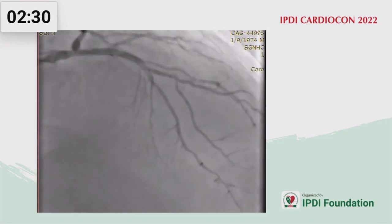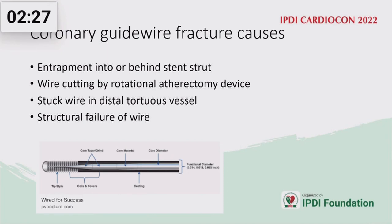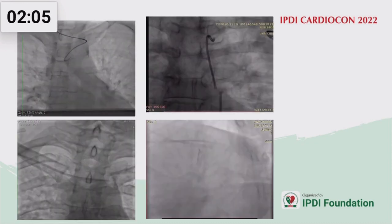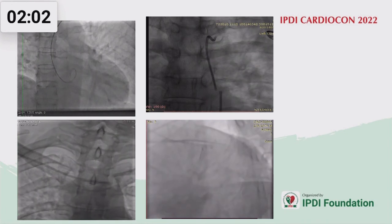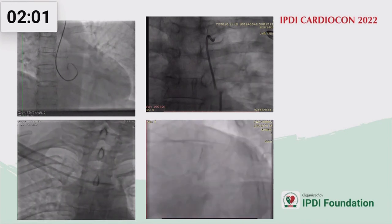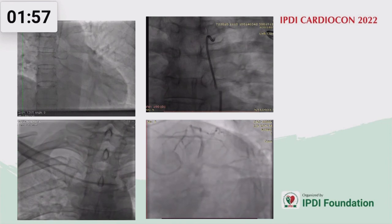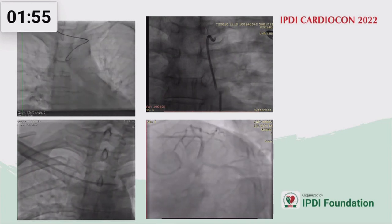These are the pictures: the fractured wires are plastered in the stents — one stent, and a second stent plastered the wire. What happens to the guidewire? The reasons for fracture are: wires entrapped behind stent struts, being cut by an atherectomy device, being stuck in tortuous or calcified vessels, or structural failure because we tend to reuse wires. Here you can see: one broken catheter, a second broken catheter, the CVP line, and a fractured wire.